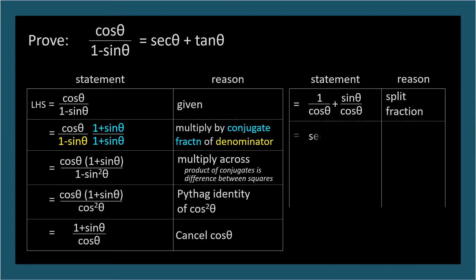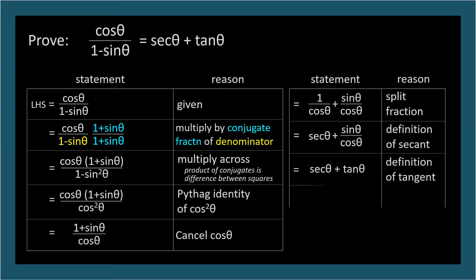The left term, 1 over cosine theta, is equivalent to secant. And the right term, sine theta over cosine theta, is equivalent to tangent. And secant theta plus tangent theta is the right-hand side, so the proof is complete.